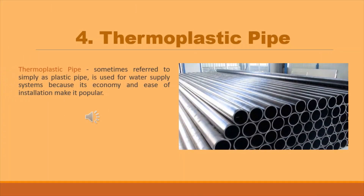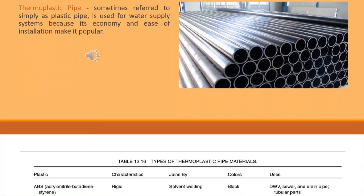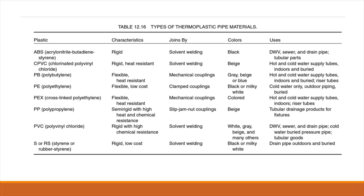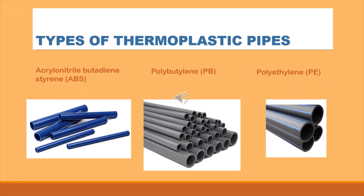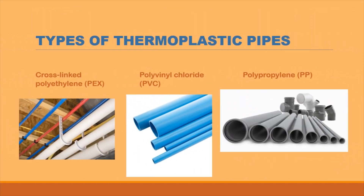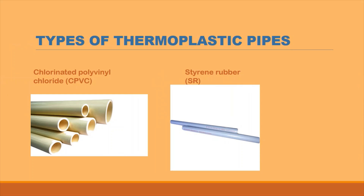Thermoplastic pipe, sometimes referred to simply as plastic pipe, is used for water supply systems because its economy and ease of installation make it popular, especially on projects such as low-cost housing or apartments where cost economy is important. Types of thermoplastic pipes include: ABS, PB, PE, PEx, PVC, PP, CPVC, and SR pipe.